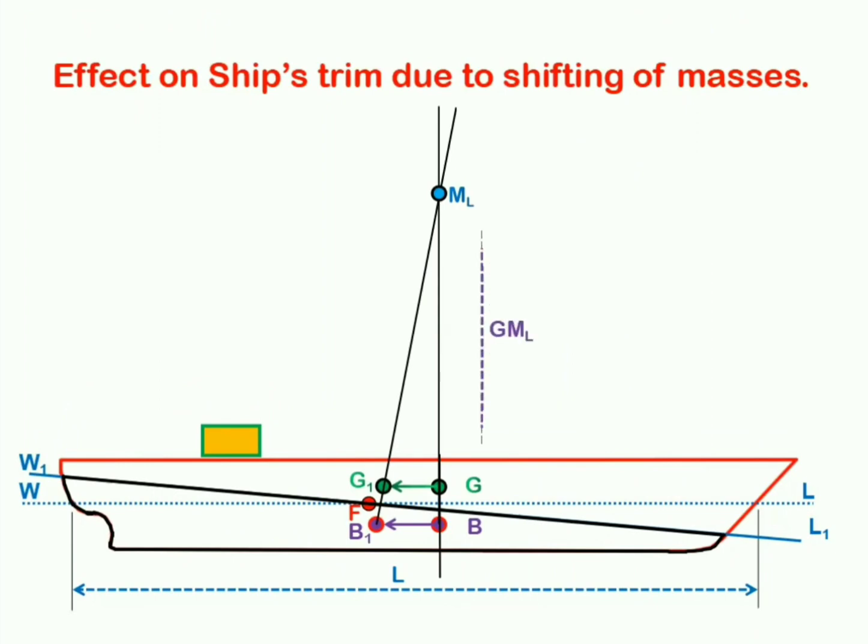The longitudinal metacentric height is well defined as the vertical distance between point G, that is center of gravity, and point ML, that is metacenter. Just the way we do it in transverse stability, metacentric height of the ship can be defined as KB plus BM minus KG. Just because we are now talking in the context of ship's longitudinal stability, GM will be replaced with GM longitudinal. We will use L as suffix over here. So, GM longitudinal is the abbreviation used for longitudinal metacentric height.